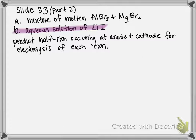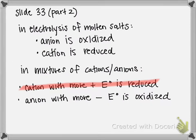For the second part, we're looking at an aqueous solution of lithium iodide. Since this is an aqueous solution, not only do we have lithium ions and iodide ions in solution, but water can also be both oxidized and reduced. So we have two potential half-reactions for oxidation and two for reduction. For oxidation, the anion with the more negative standard electrode potential is oxidized.